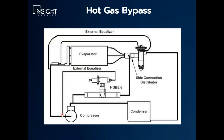The hot gas bypass valve actually has a bulb that is strapped to the suction line. When that bulb cools, it allows a spring in this hot gas bypass valve to open, and some of that hot gas is allowed to flow through the valve and enter right before the evaporator, which artificially elevates the suction pressure and the suction temperature so that you don't freeze your coil. This is a frost prevention device that allows your compressor to run longer without way over-cooling your space or freezing your coil.